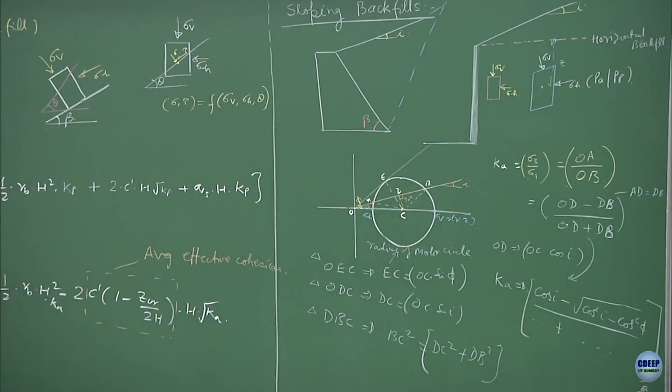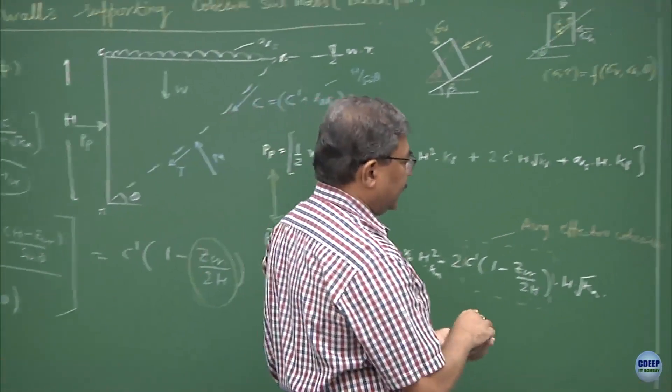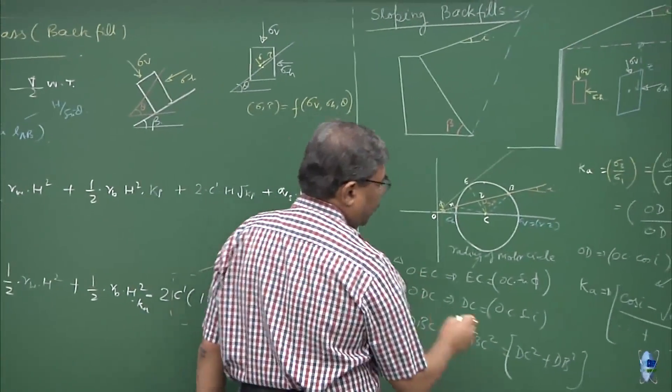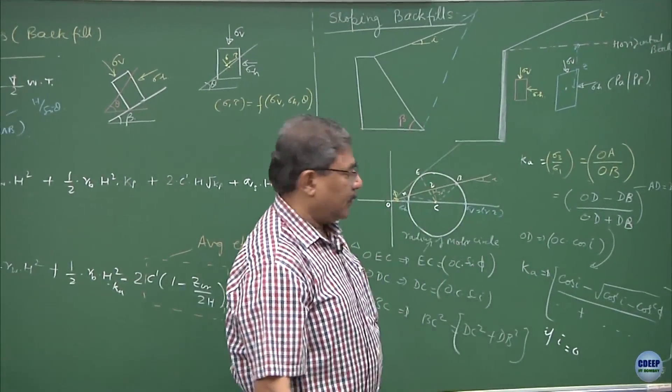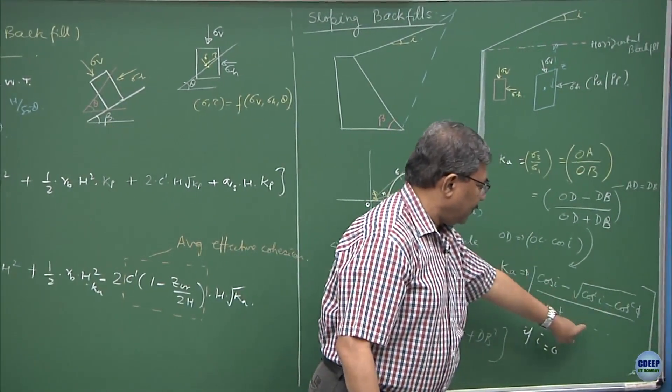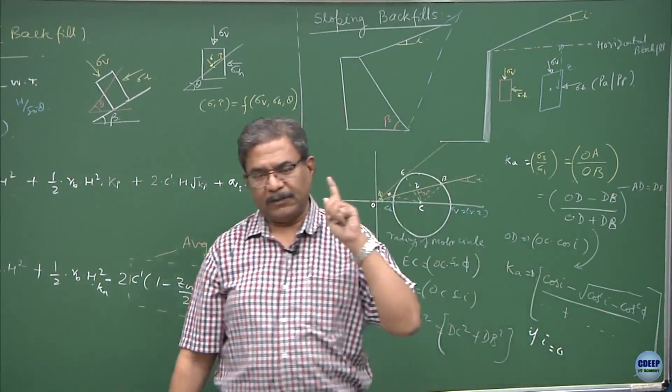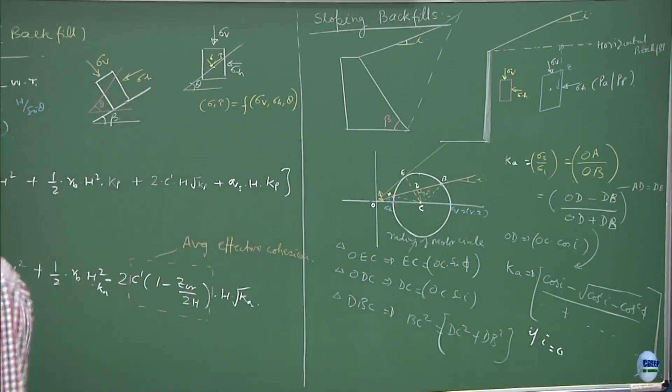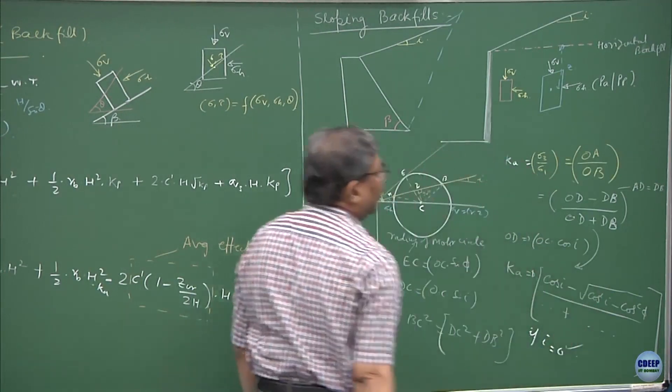This is the value of Ka which we have obtained. Now let us check it quickly, if i is 0, what is going to happen? This will be 1 minus under root of 1 minus cos square phi over 1 plus under root of 1 minus cos square phi. This becomes 1 minus sin phi over 1 plus sin phi. So that means whatever we have derived is alright.